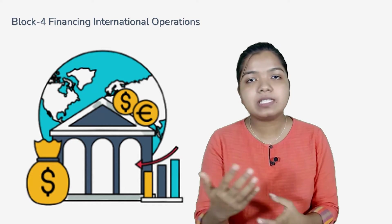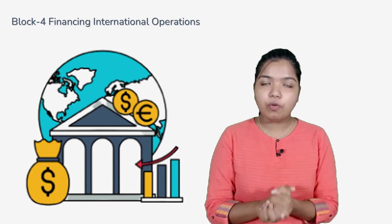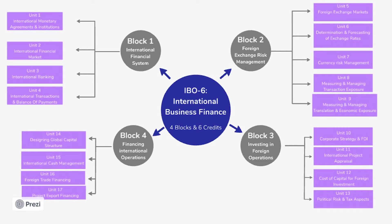We have to complete the financing in this block, and complete Block 4 as well. You can see on the screen: IBO 6 is the subject code, International Business Finance is the subject name. There are 4 blocks, and we have to get 6 credits across the 4 blocks — the subject is a total of 6 credits. Block 1 is International Financial System, with 4 units: Unit 1, International Monetary Agreement and Institutions; Unit 2, International Financial Markets; Unit 3, International Banking; Unit 4, Balance of Payments.